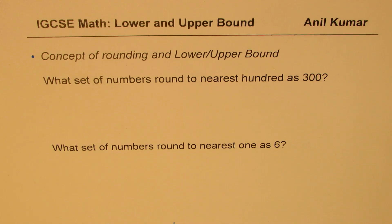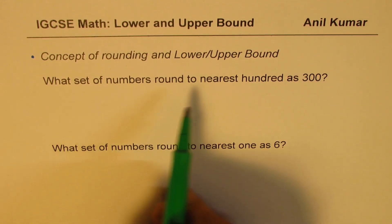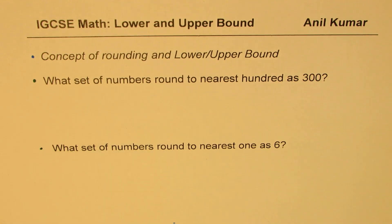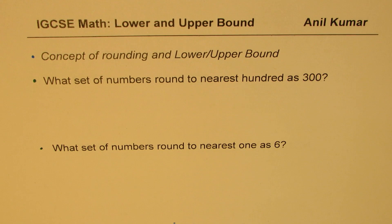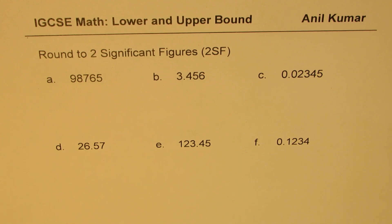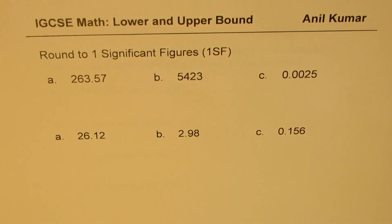Here are two examples for us. The first one is: what set of numbers round to the nearest 100 as 300? The second question is: what set of numbers round to the nearest 1 as 6? Once we understand this link between rounding and upper and lower bound, we'll take up more examples. We'll understand how to round to two significant figures, which is also a term not commonly used by many students.